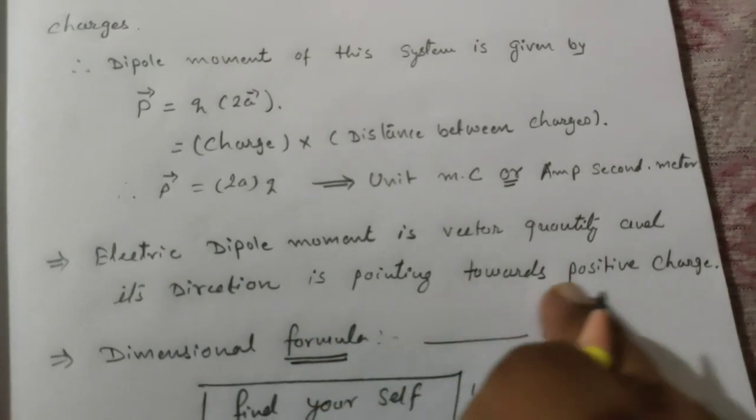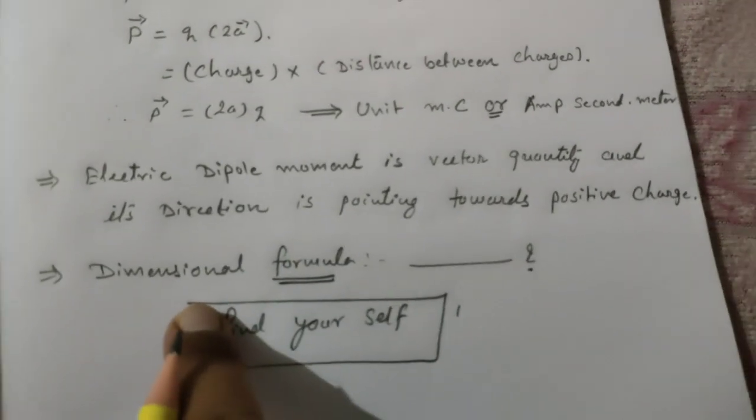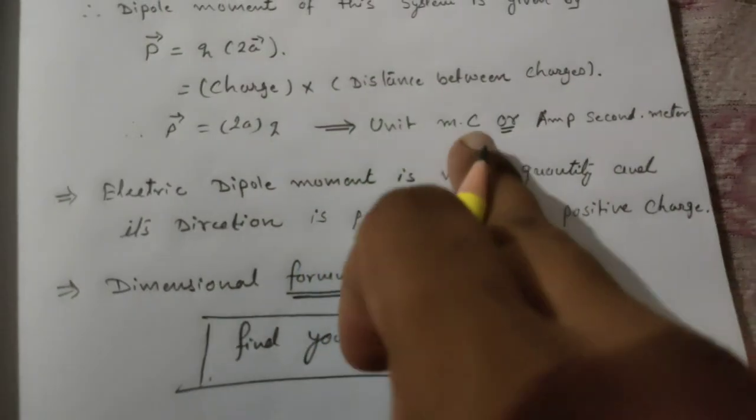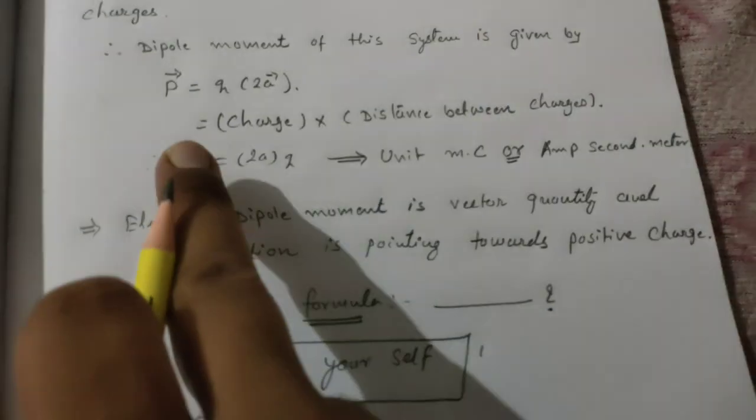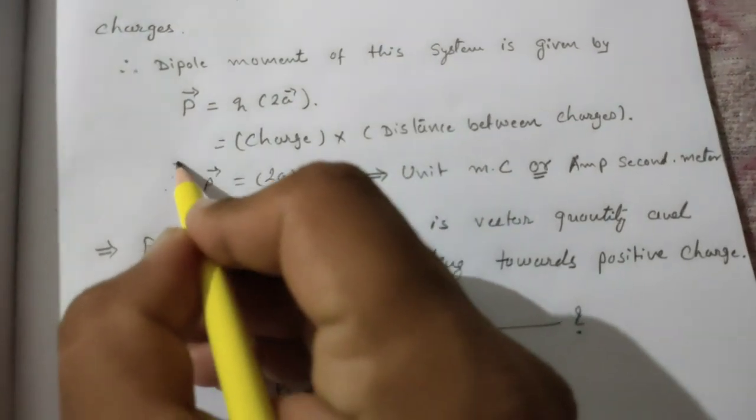Remember, the direction of electric dipole moment is towards positive charge, means negative to positive. Now here I am going to give you one simple homework: you have to find out the dimensional formula of this unit.